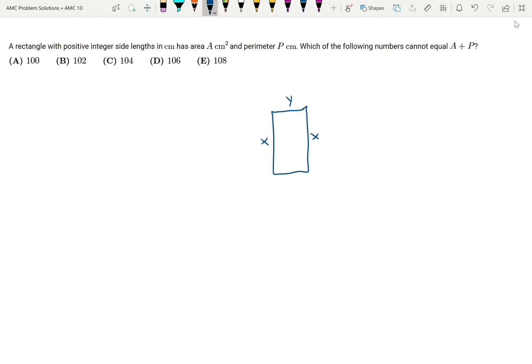Side lengths x and y. So the area is going to be xy and the perimeter is going to be 2x plus 2y.